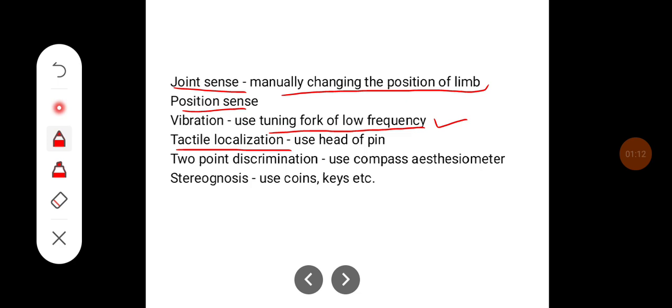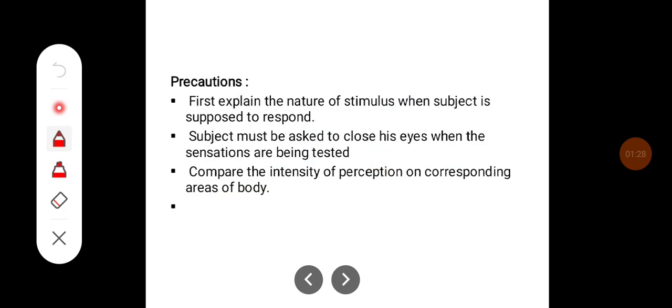Tactile localization can be tested with the head of a pin, and two-point discrimination is tested using the compass aesthesiometer. For stereognosis, you can use known objects such as coins, keys, etc.